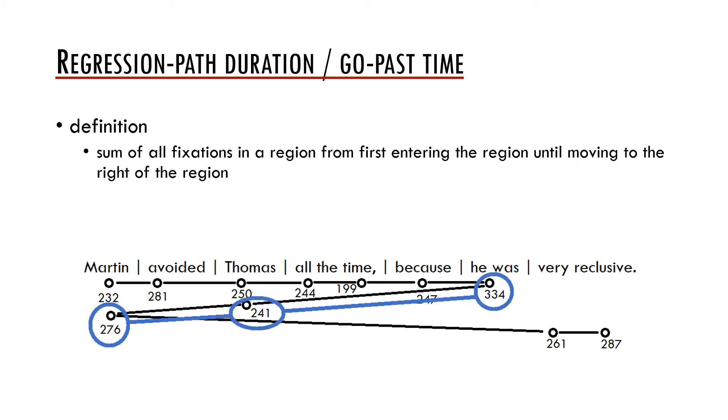An important measure is the regression path duration or go-pass time. It is defined as the sum of all fixations in a region from the first entering the region until moving to the right of the region. This means that we add up not only the fixations in the given region, but also all fixations which are done after a regression prior to getting to the following region. In the example below, the regression path duration of the region he was is 851 milliseconds.